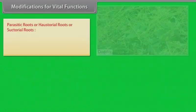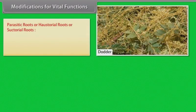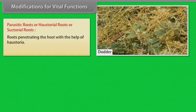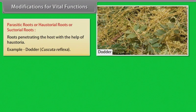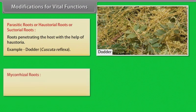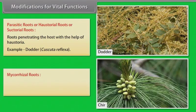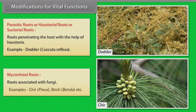Parasitic roots or haustorial roots or sectorial roots: Roots penetrating the host with the help of haustoria. Example: Cuscuta. Mycorrhizal roots: Roots associated with fungi. Examples: cheer, birch, etc.